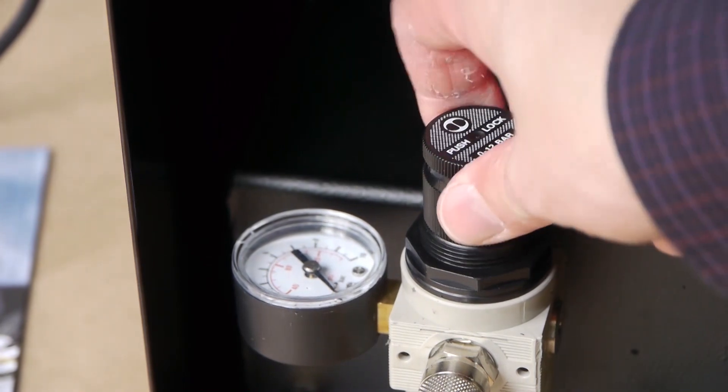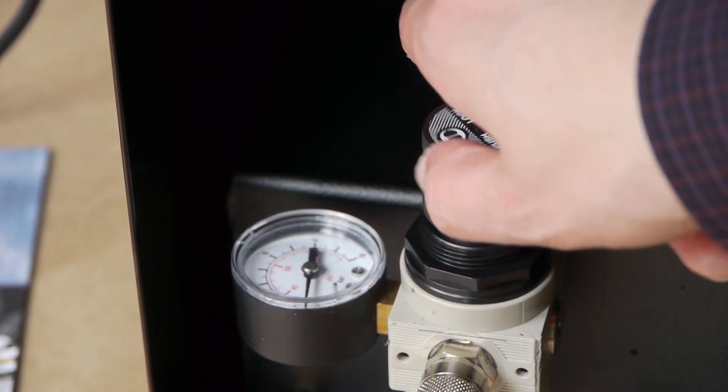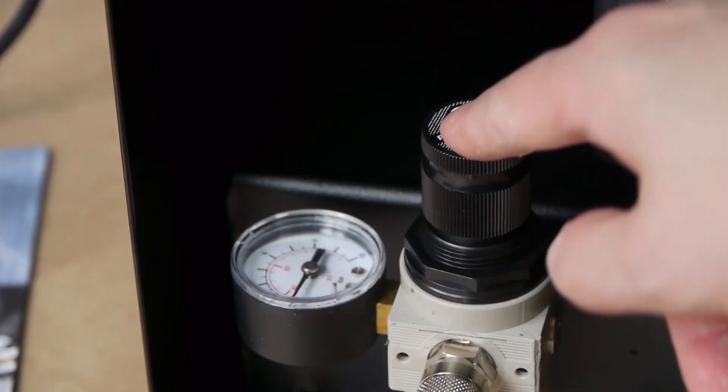Then set it to the desired operating pressure by pulling the button upwards and turning it clockwise until the desired pressure is being displayed.